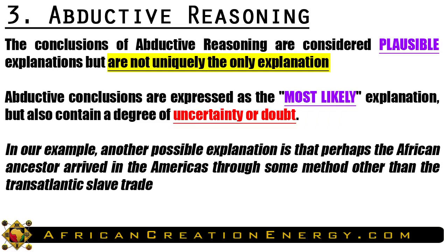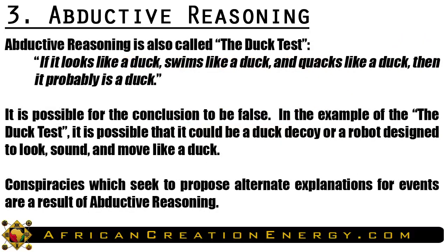Abductive conclusions are expressed as the most likely explanation, but also contain a degree of uncertainty and doubt. Another possible explanation is that the African ancestor arrived in the Americas through some method other than the transatlantic slave trade. Abductive reasoning is also called the duck test, given by the expression: if it looks like a duck, swims like a duck, and quacks like a duck, then it is probably a duck. It is possible the conclusion is false — it could be a duck decoy or a robot. Conspiracies seek to propose alternative explanations for results of abductive reasoning.